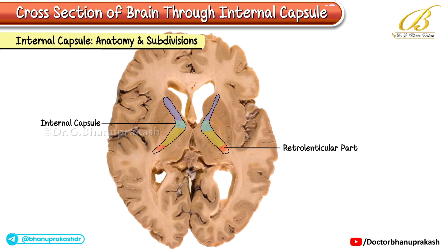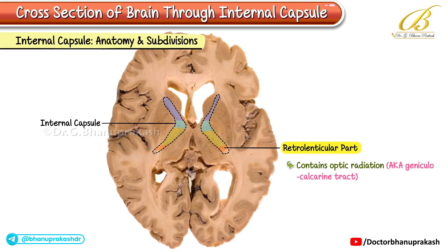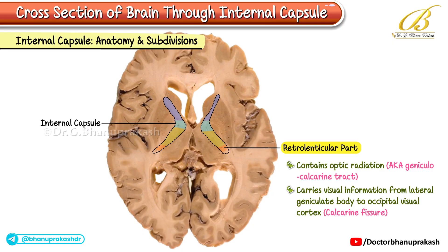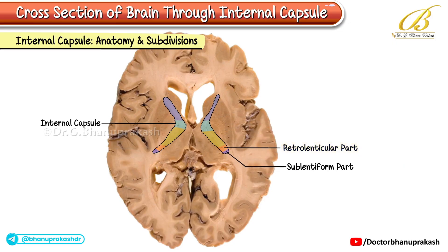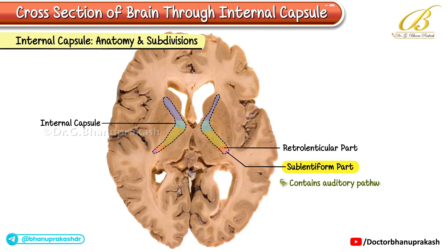4. Retrolenticular part: The retrolenticular portion is located caudal to the lentiform nucleus. It contains the optic radiation, also known as the geniculocalcarine tract, which carries visual information from the lateral geniculate body to the occipital visual cortex, specifically the calcarine fissure. 5. Sublentiform part: Positioned beneath the lentiform nucleus, the sublentiform portion contains the auditory pathway.